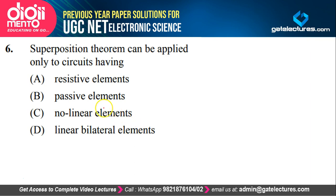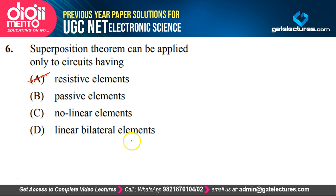Look at the next question: superposition theorem can be applied only to circuits having what? When you learned about superposition theorem, you must have seen that if any passive, non-linear, or linear bilateral elements are present in the circuit, superposition theorem cannot be applied. Only if you have independent current or voltage sources and resistive elements can you apply the superposition theorem. So option A is the correct one — you should not have passive, non-linear, or linear bilateral elements.